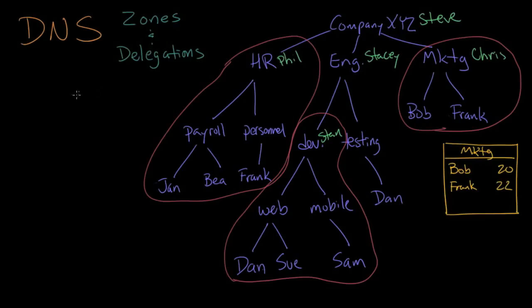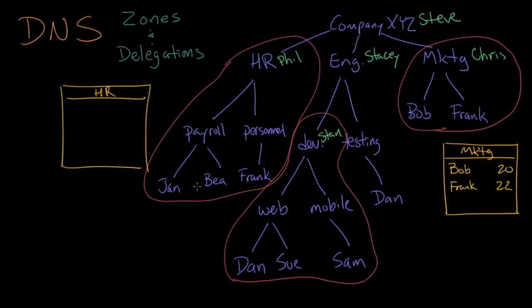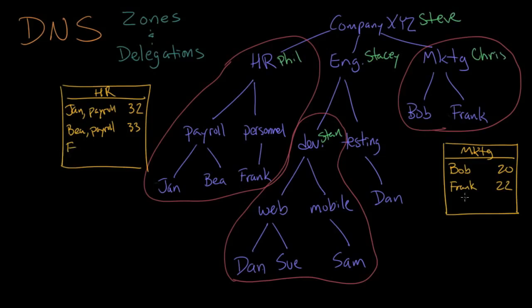Phil is going to do the same thing — this is the HR phone directory. It's a little more complicated because we need to list the department each person works in. Jan, who's in payroll, is at extension 32. B, also in payroll, is at extension 33. And then Frank — a different Frank from the marketing one, that's why we write down the department — in personnel is at extension 41.